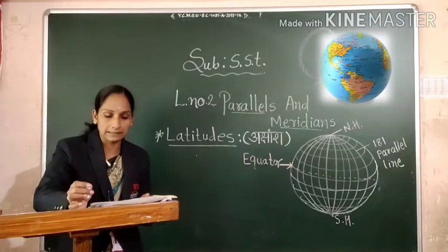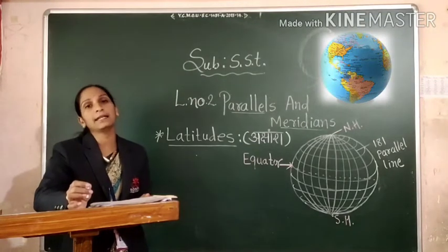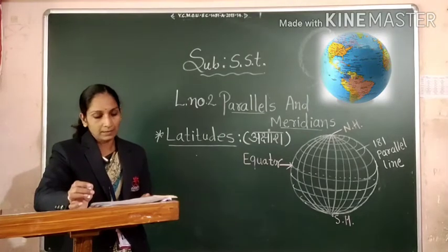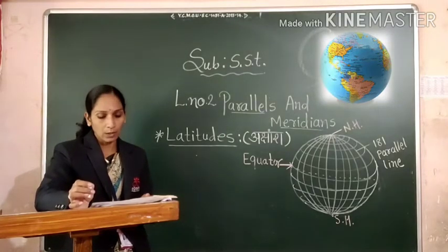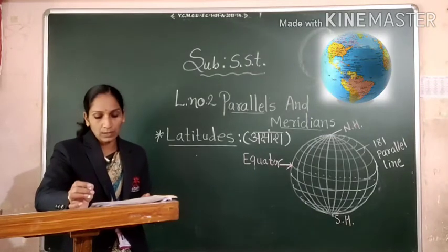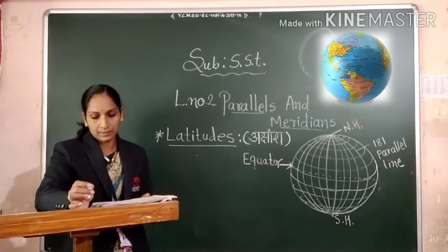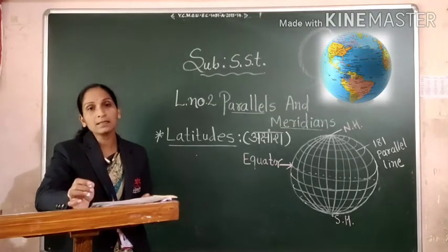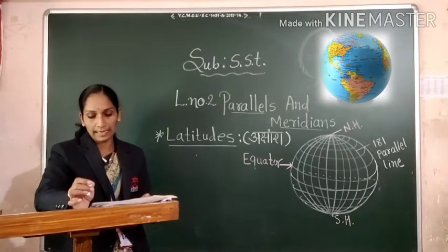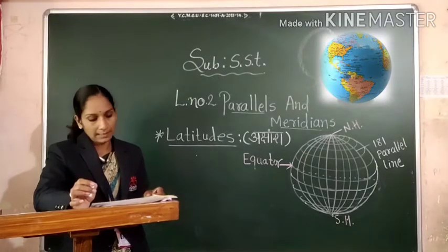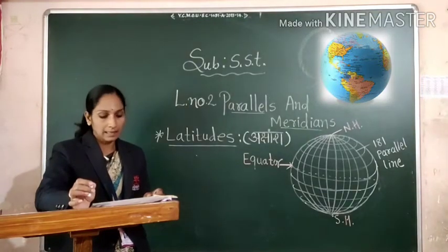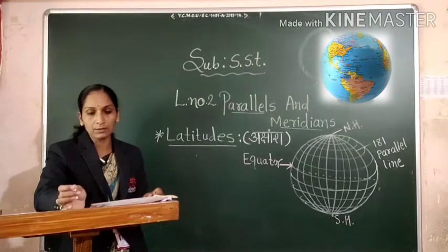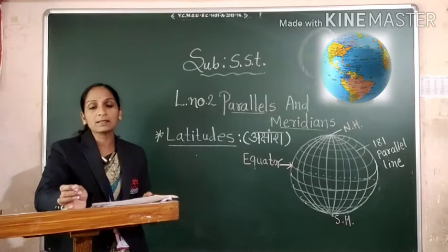Facts about parallels: There are 181 parallels or lines of latitude. The equator is the most important of all and is also called the great circle. All parallels are full circles except the north pole and the south pole, which look like points. The length of the parallels keep decreasing as we move away from the equator towards the pole.